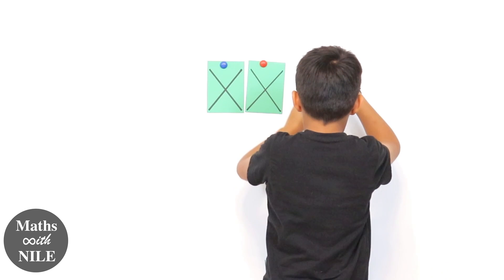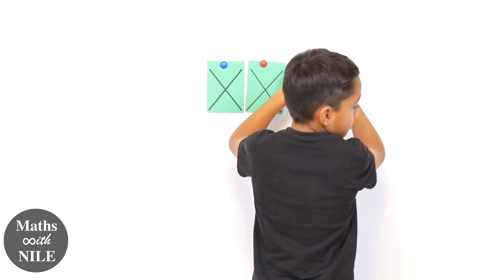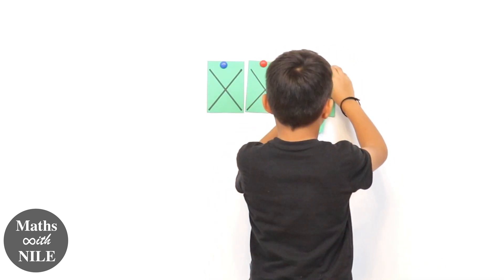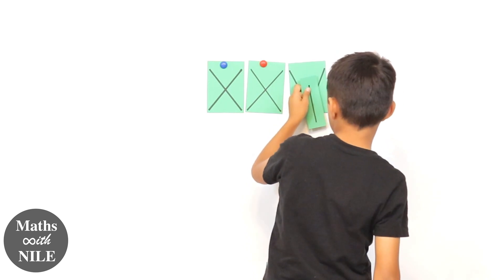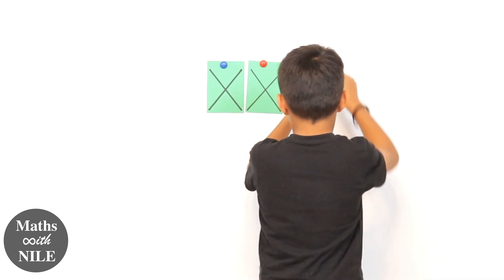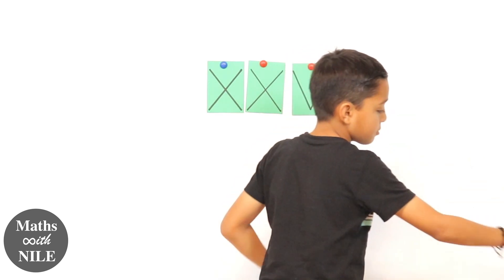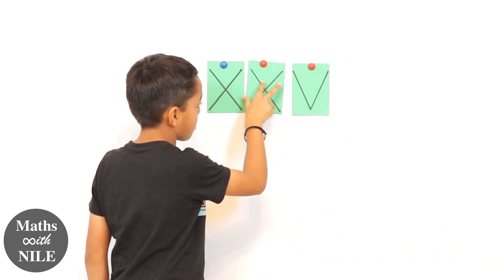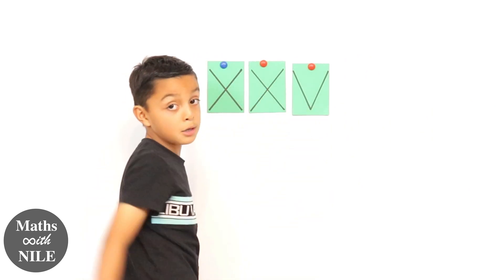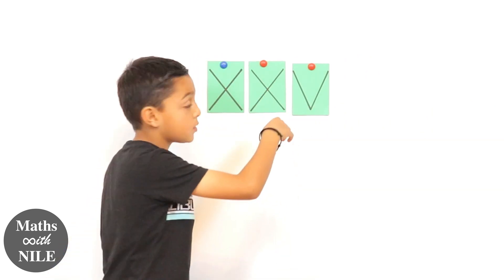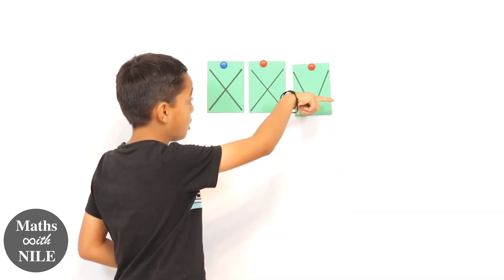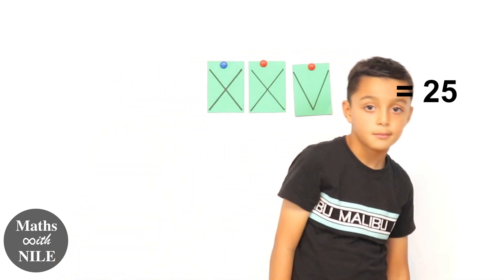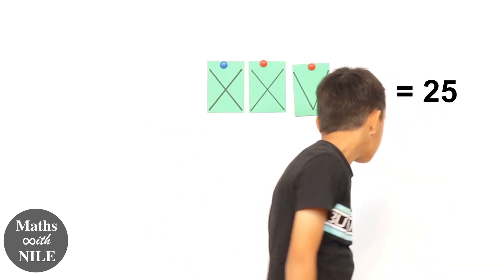Why don't you show us, as you have those ones up, what's 25? And 20 is X plus X, and then V is equal to 5 and the smaller number's after so you add it together, which is 25. Okay, so that's 25.